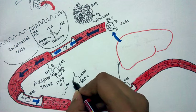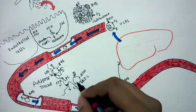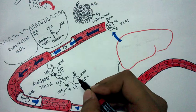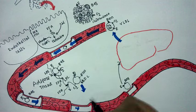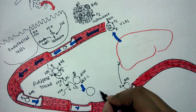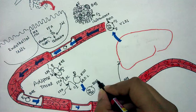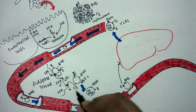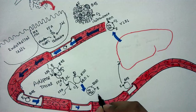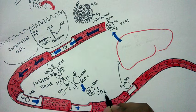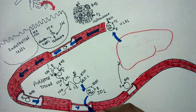Because VLDL has C2, it is attracted toward LPL — lipoprotein lipase — in the adipose tissue, and its free fatty acids are taken up there. After this, VLDL has less triglyceride but a lot of cholesterol; it still has ApoB100 and ApoE but has lost C2. This new particle is called intermediate density lipoprotein, IDL, also known as VLDL remnant.